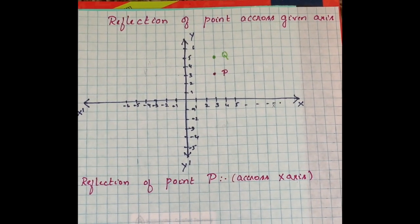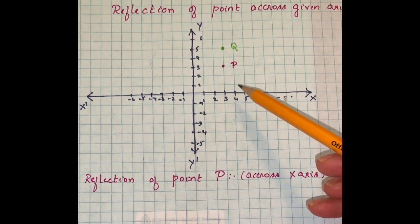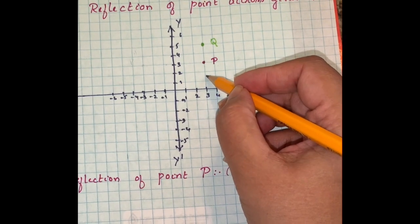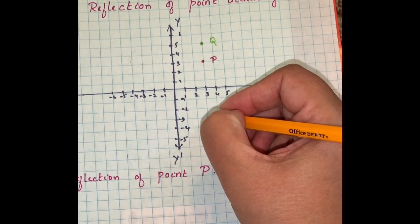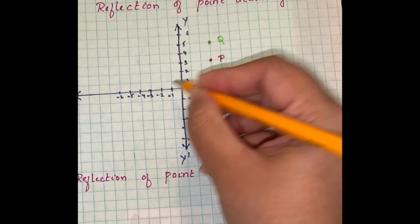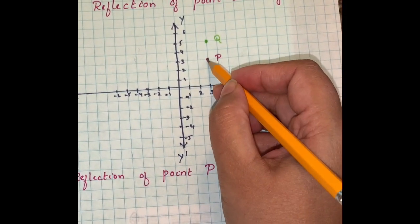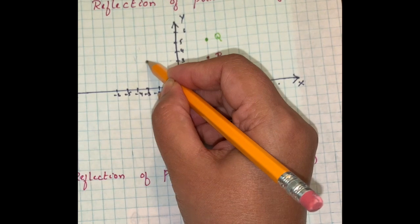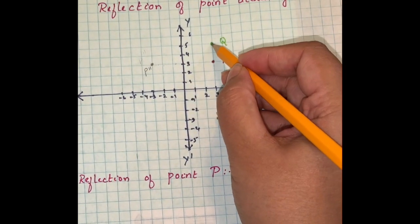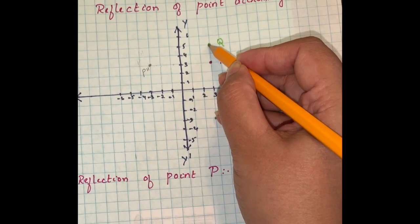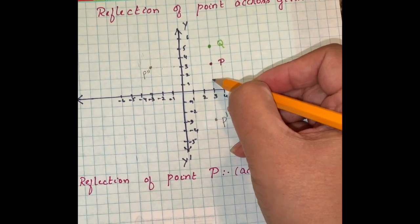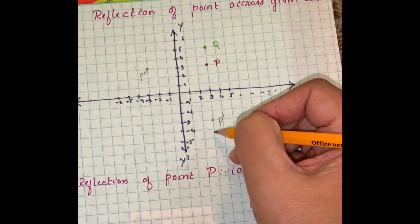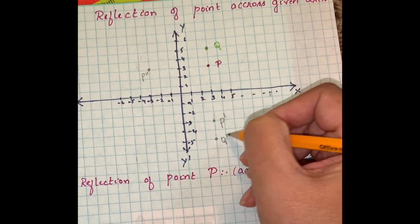To find the reflection of point P across the x-axis, measure the distance from point P to the x-axis — that is three units — then mark the reflection the same distance on the other side. That gives the reflection across the x-axis. Similarly, to reflect point Q across the x-axis, count five units from Q down to the x-axis and then five units further, marking that as Q prime.